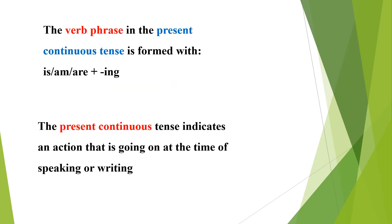The verb-phrase in the present continuous tense is formed with is, am, or are — which are helping verbs — plus the ing form. You have to write is, am, or are and the base form with ing added to it.